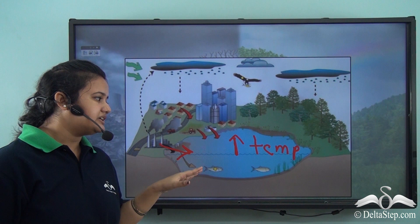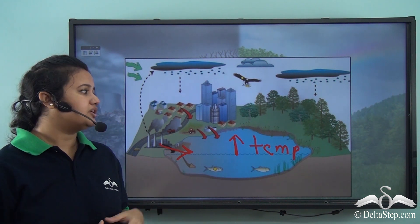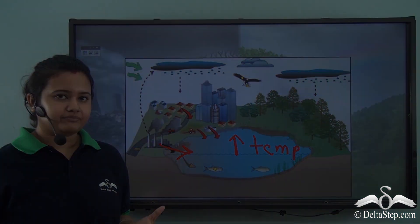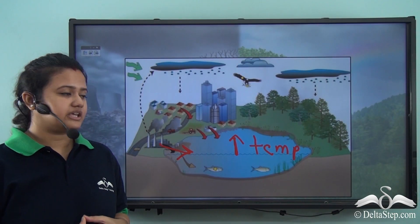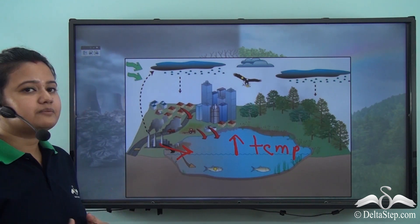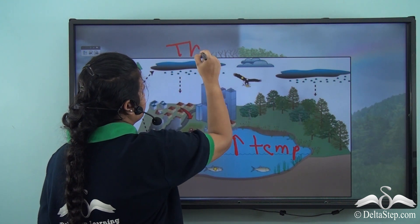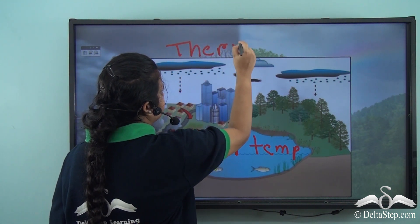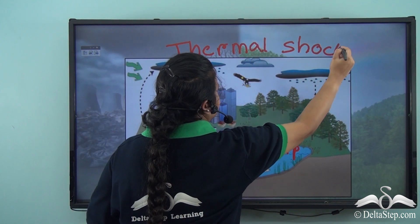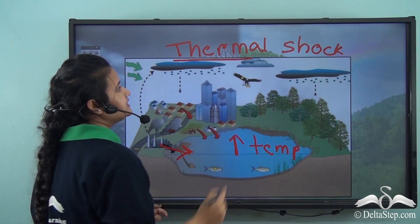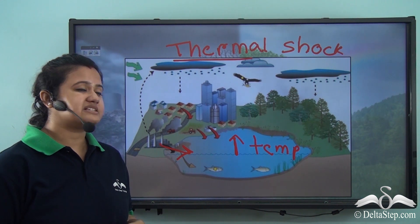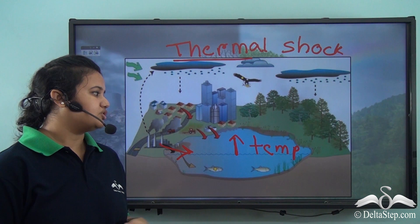This suddenly increases the temperature of these water bodies. Marine animals like fishes and corals, which are adapted to a particular temperature, cannot tolerate this high temperature and they eventually die. This sudden increase in temperature comes almost as a thermal shock to them.